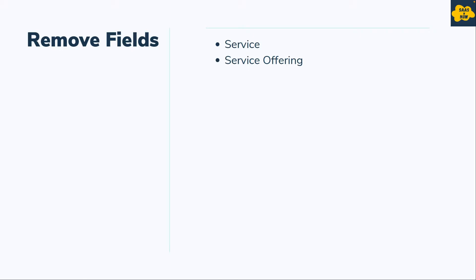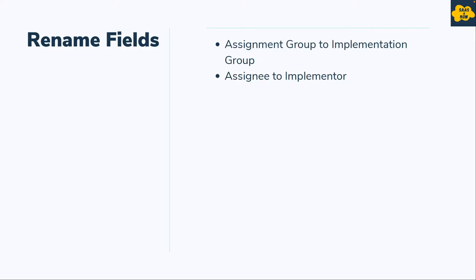The fields to remove are the service field and the service offering field. The second task will be to rename a few fields: assignment group will be renamed to implementation group, and the assigned to field will be renamed to implementer.